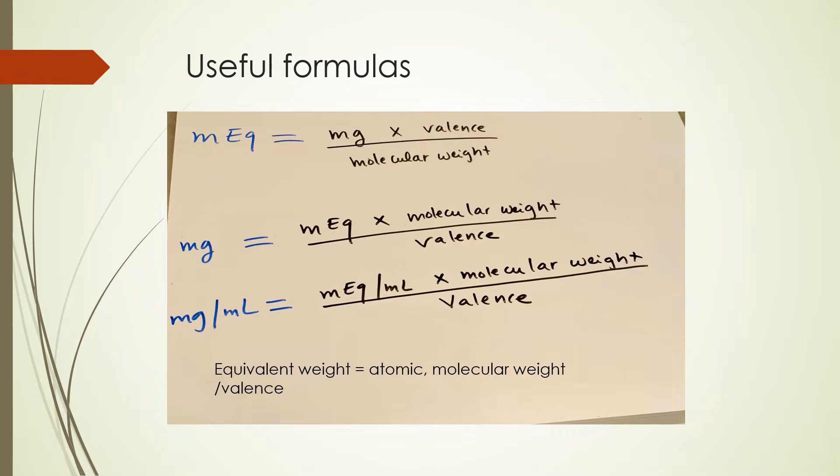If the weight is given in grams, don't forget that it has to be converted to milligrams, and then you have to find the molecular weight of the compound. Then knowing the valence, you can find the milliequivalent.